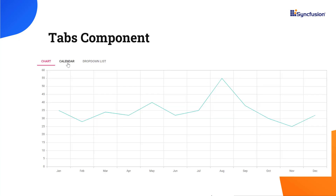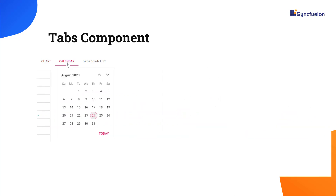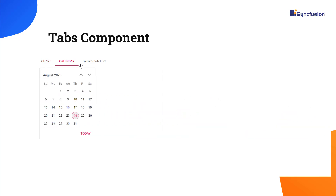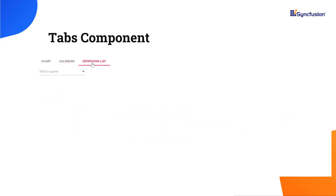In this example, you will see how different components like chart, calendar and drop down list are integrated as individual tab items. I will show you the code snippet to achieve this.